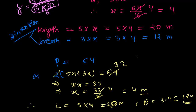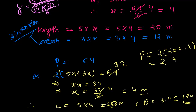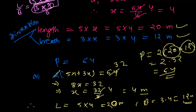To verify: perimeter equals 2 times (length plus breadth) equals 2 times (20 plus 12) equals 2 times 32 equals 64. Yes! We get 64, which confirms our answers for length and breadth are correct.